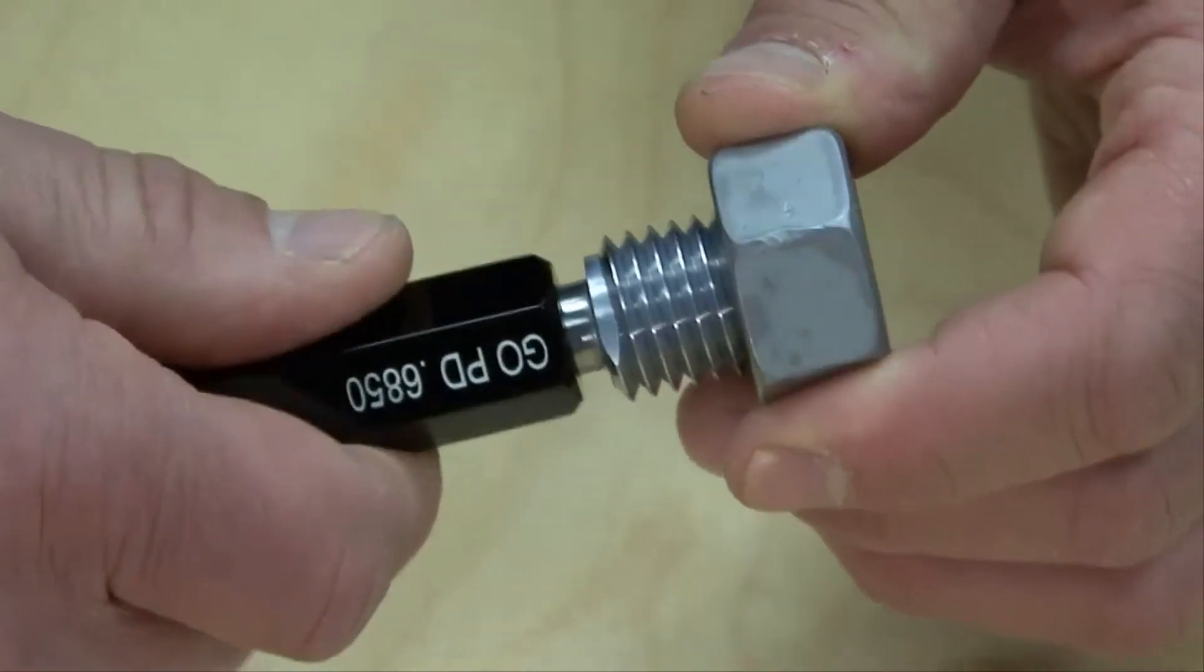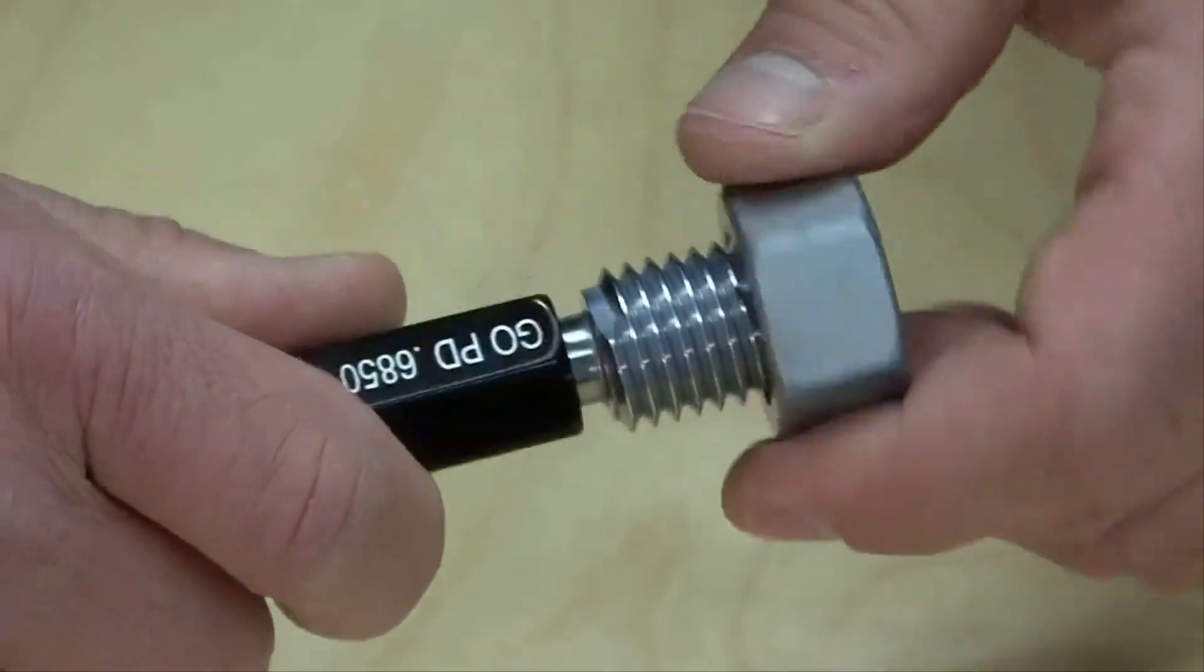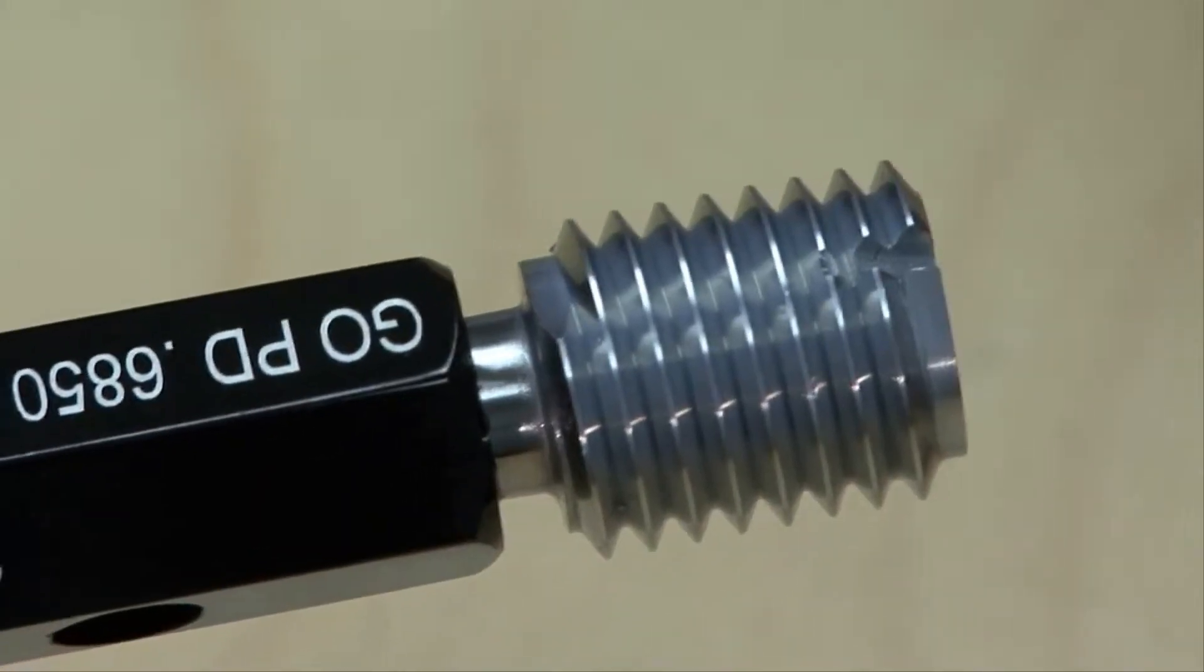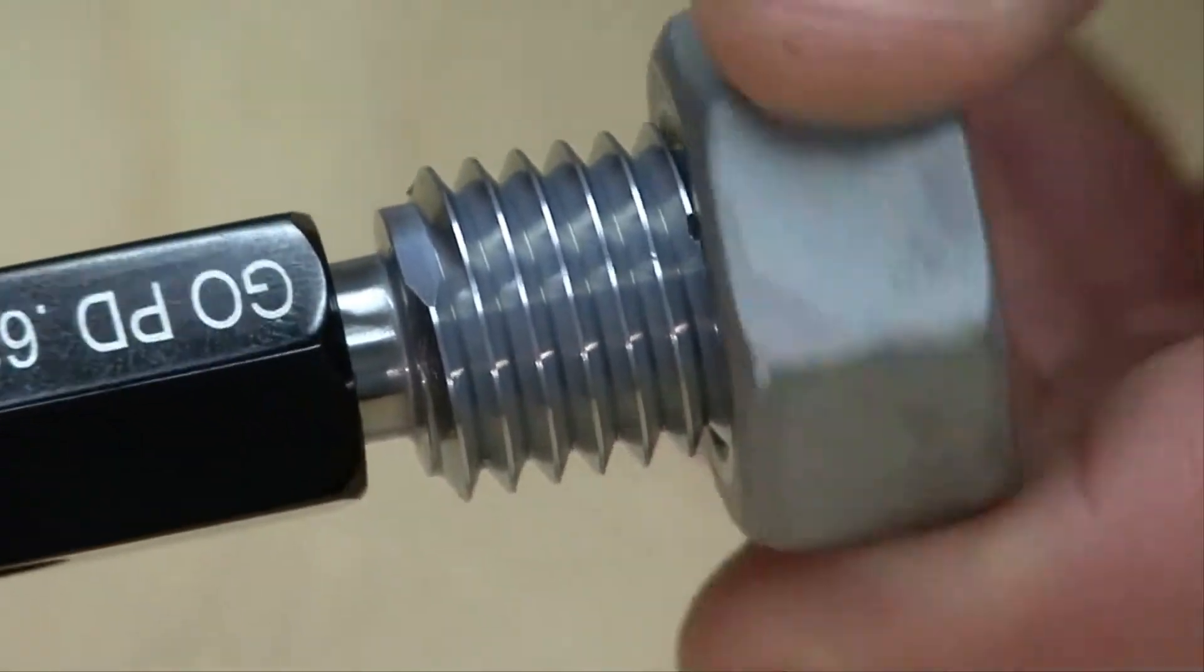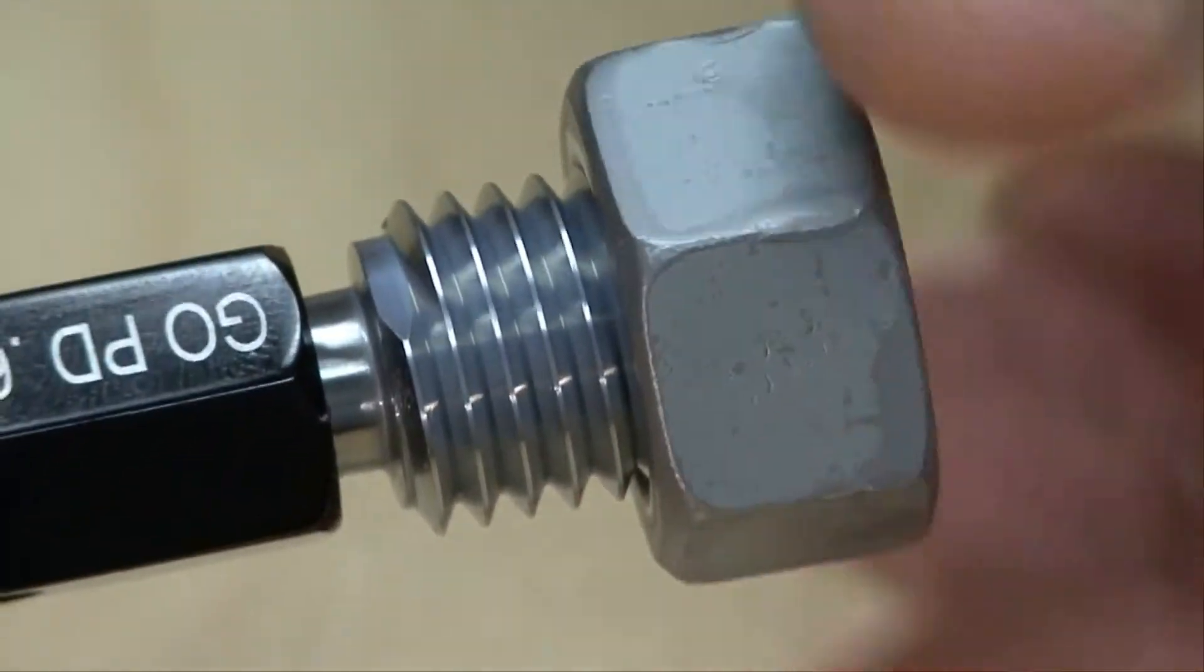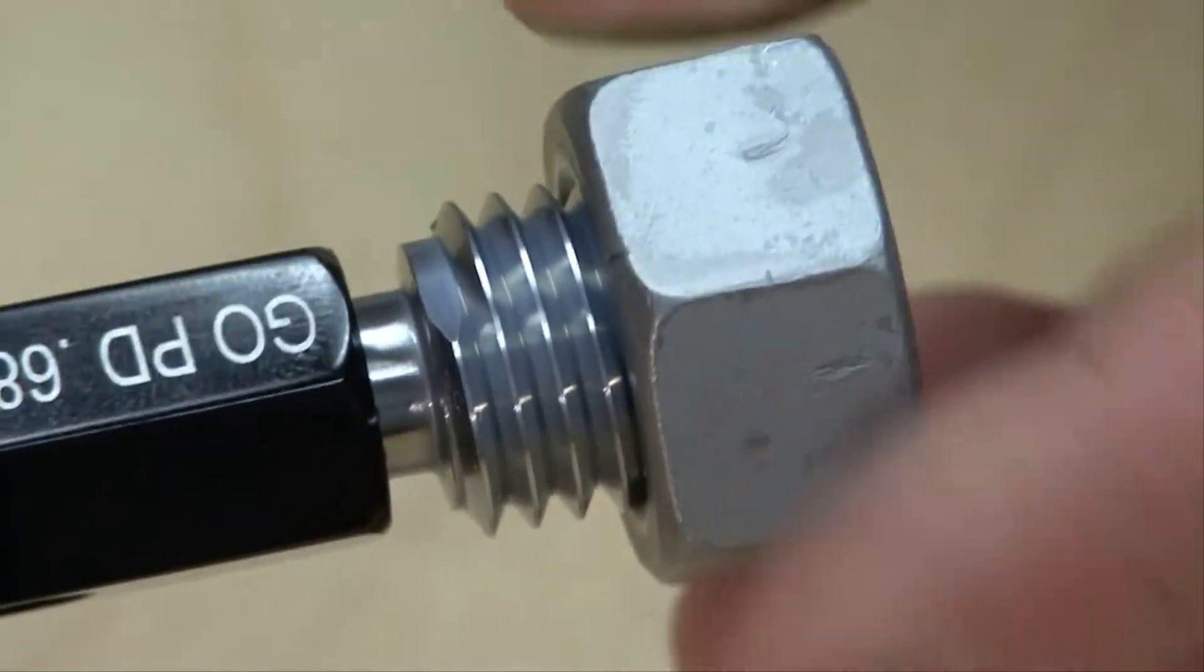If the gauge starts to bind, the inspector should stop before damaging the part or the gauge. The part may be undersized or tapered. Other possibilities include lead error or a damaged thread. With fine threads, the inspector should be careful to not cross-thread the parts.